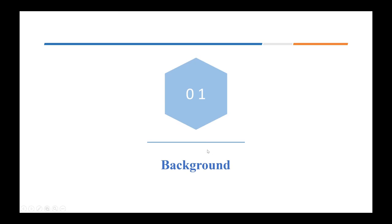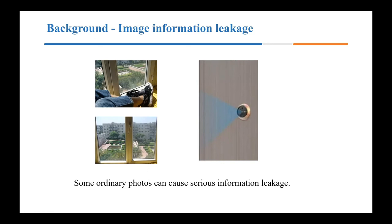I will start with the background. With the rapid development of the Internet of Things and the fifth generation network, a variety of smart devices have emerged, which makes it very easy to share images. However, this also leads to a lot of information leakage problems. The two pictures on the left are daily photos shared by a celebrity, and in the eyes of many people these two pictures don't leak any private information. However, about 40 minutes after she shared the two photos on Moments, someone accurately identified the neighborhood and even the house number she lived in.